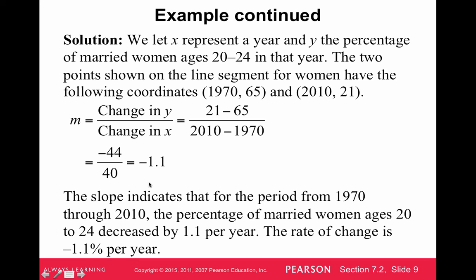That's really important to understand what the unit means. Remember, we're doing percents divided by years. So it's percent per year. So it says the slope indicates that from the period from 1970 to 2010, the percentage of married women ages 20 to 24 decreased by 1.1 per year. So really the answer is the rate of change is a decrease of 1.1% per year because we're taking percents and dividing per year.